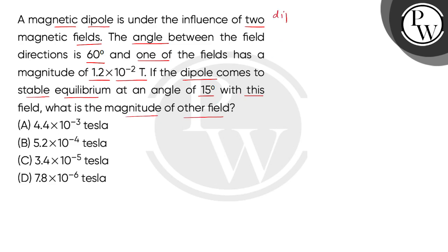The question states we have a magnetic dipole in two fields. We consider the first magnetic field as B1 and the second as B2. The two fields make an angle of 60 degrees, and the magnitude of the first field is 1.2 × 10^-2 tesla.